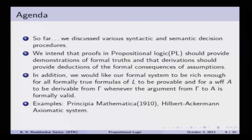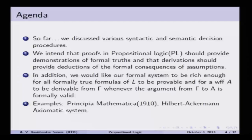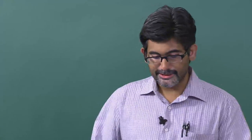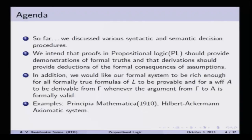We want our formal system to be rich enough for all formally true formulas of L to be provable. If you say something is true but have no proof, that does not work — you need a proof for all true propositions. For a well-formed formula A to be derived from a set of formulas Γ, whenever the argument from Γ to A is formally valid, all true propositions also have to be valid. Examples of axiomatic systems are Principia Mathematica and the Hilbert-Ackermann axiomatic system.